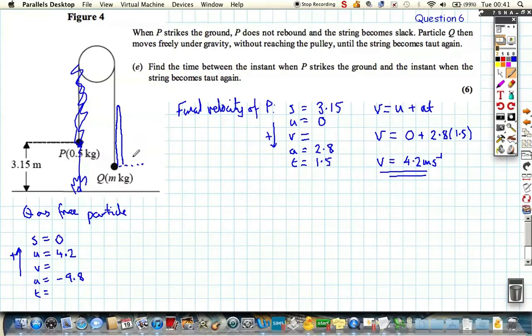We need to find the time taken, so S, U, A and T, so it's S equals UT plus half AT squared. We're told that 0 equals 4.2T plus half of A which is minus 9.8 T squared. So 0 equals 4.2T minus half of 9.8 is 4.9 T squared. Let's take this all onto the other side, so we're really going to get 4.9T² minus 4.2T equals 0.